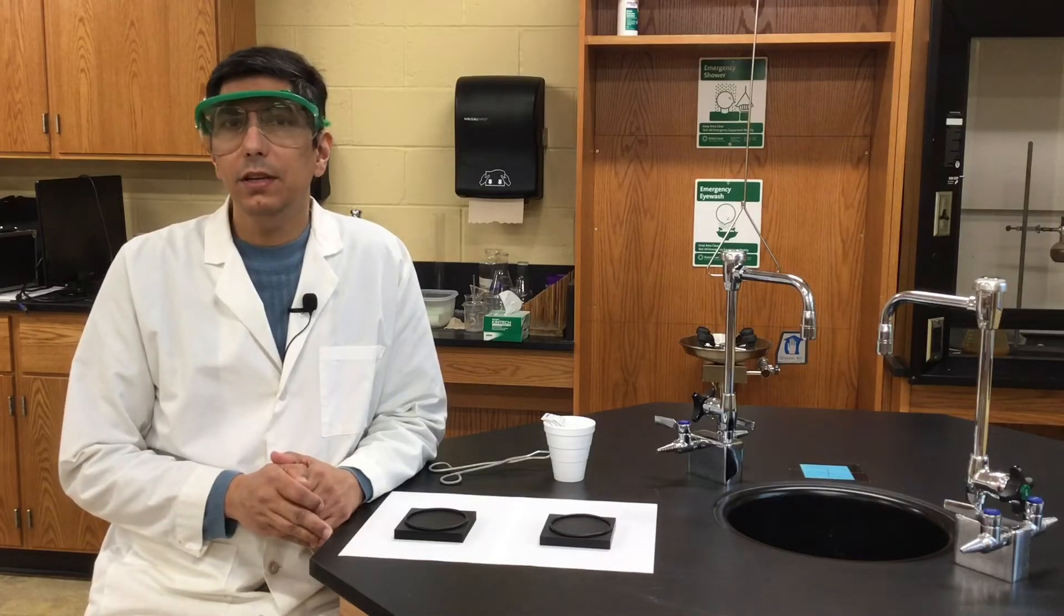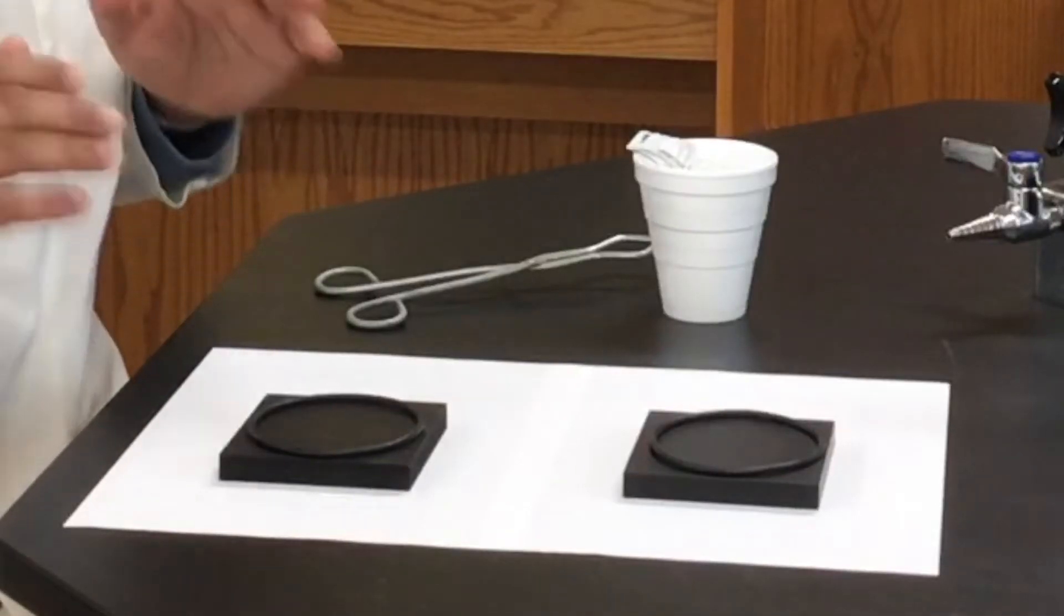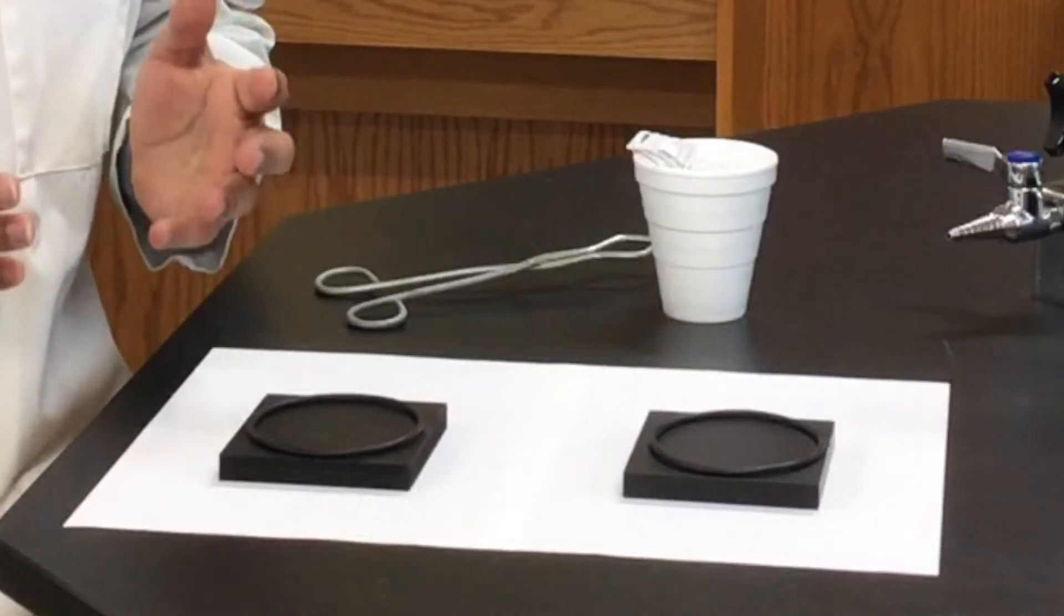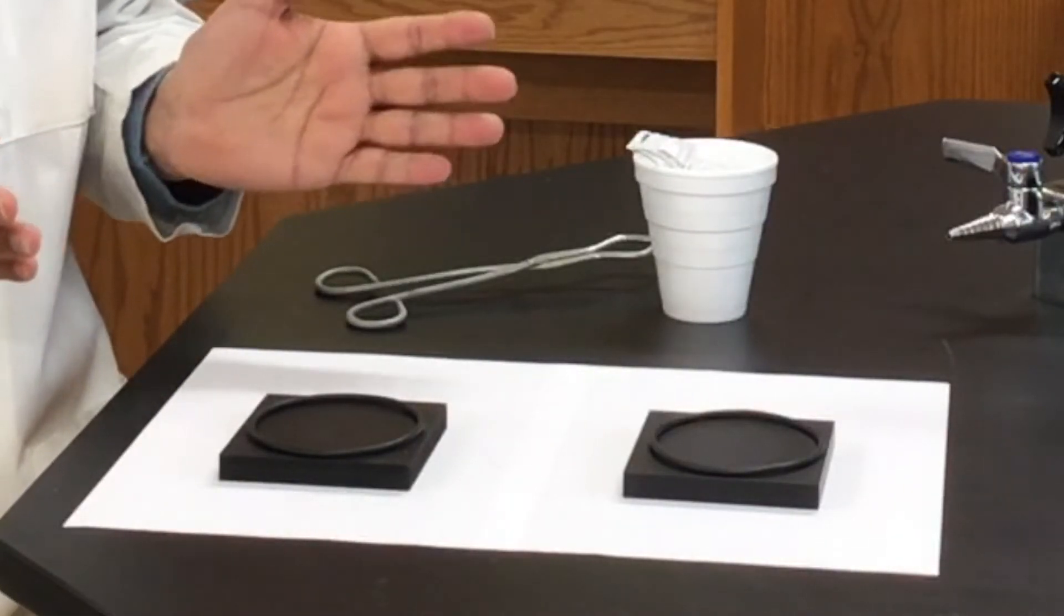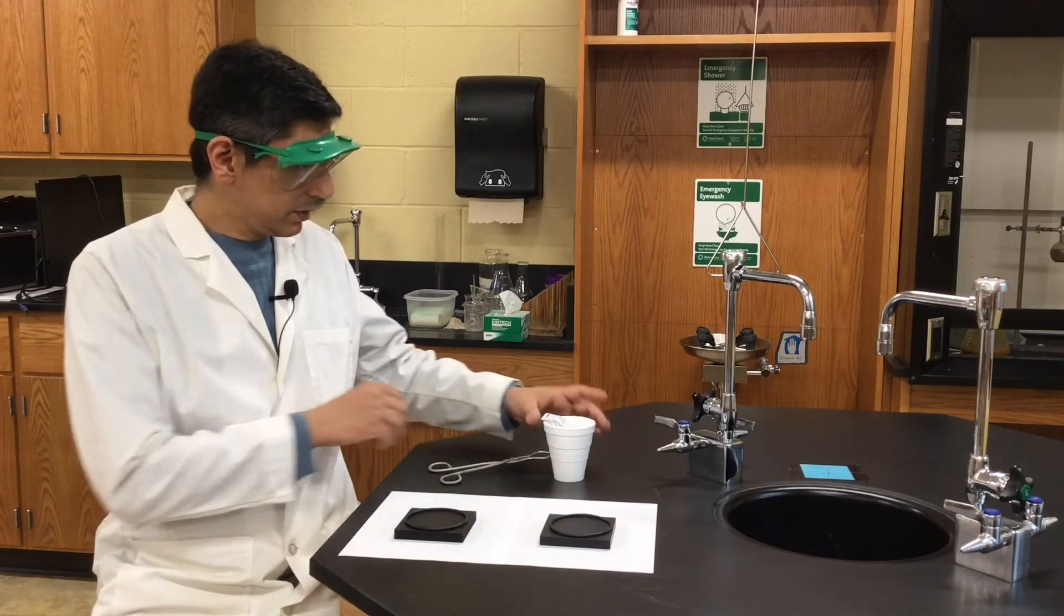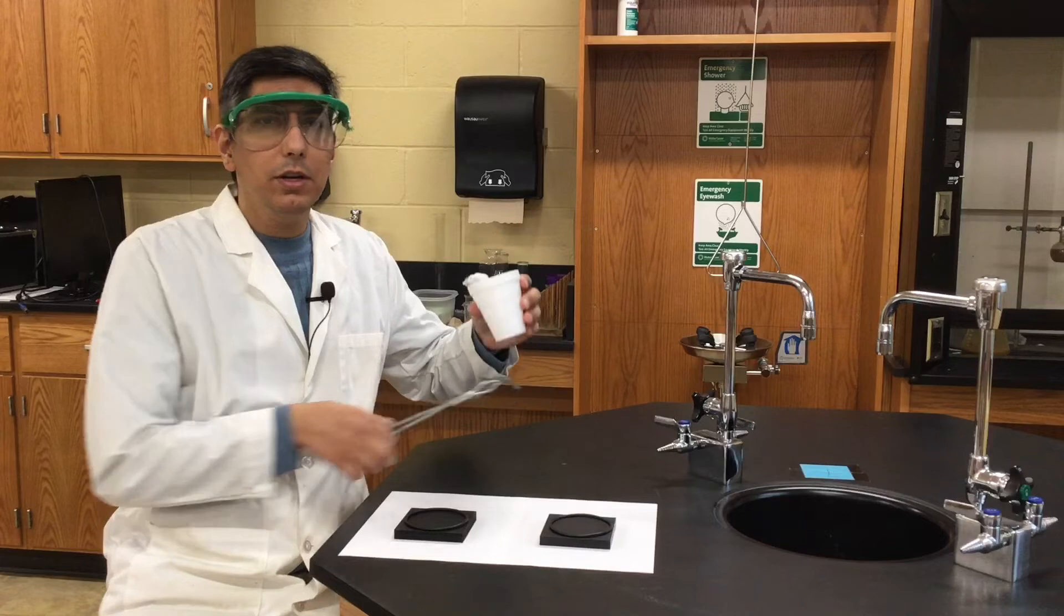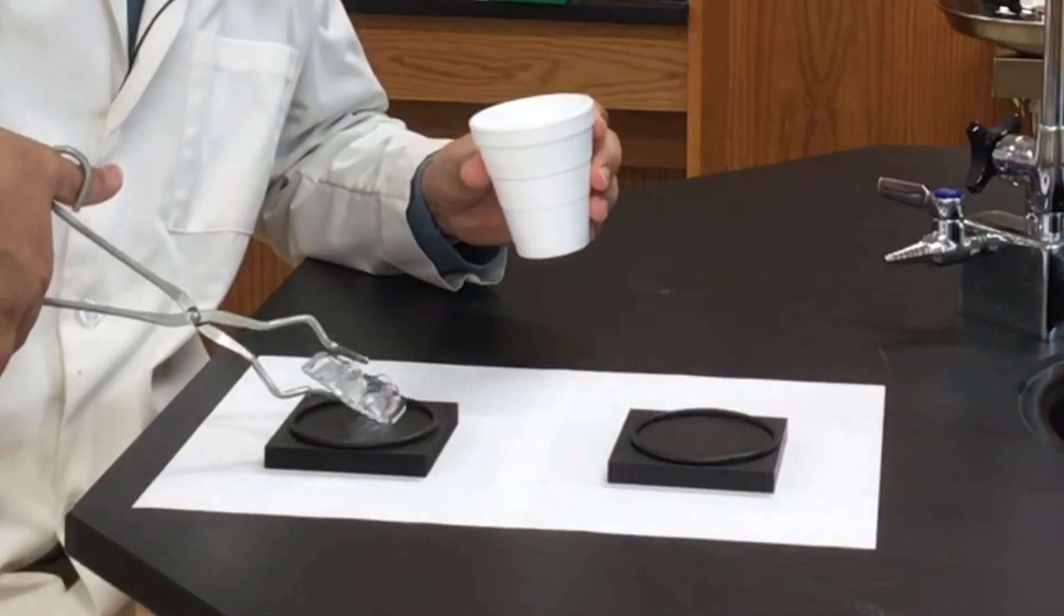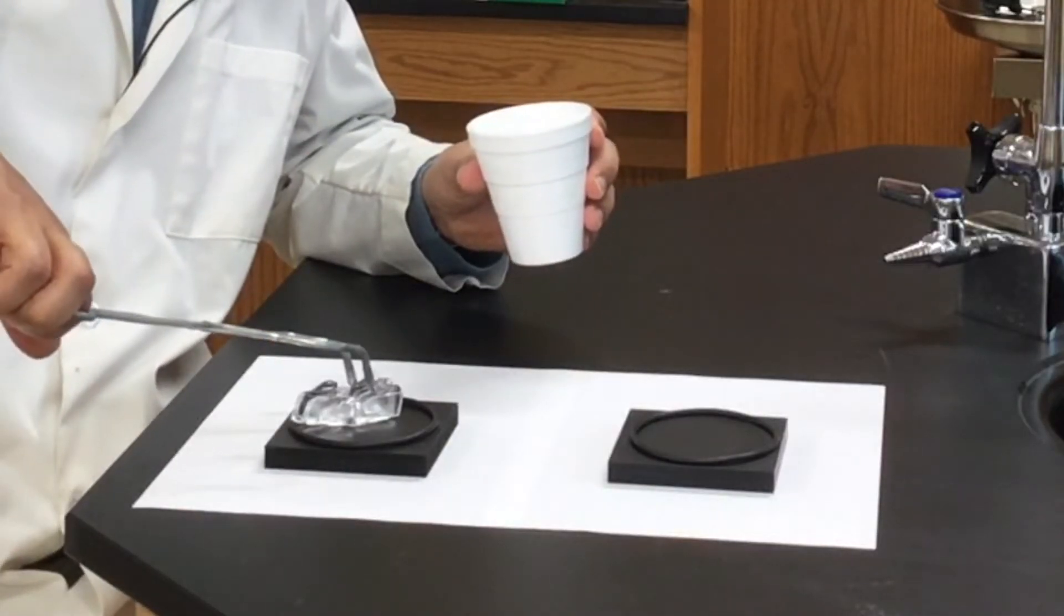Today, we're going to demonstrate the difference with two blocks here on the lab station. Now, to the casual observer, these two blocks look pretty much identical. But let's take a closer look. I have some ice here, and I'm going to place some ice on the first block, just like that.